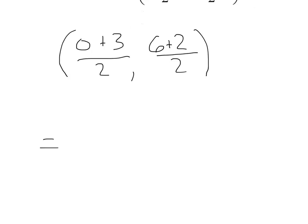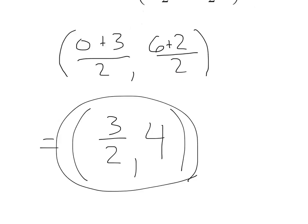From there, if we simplify all of it out, we'll get 3 halves. And 6 plus 2 is 8, divided by 2 is 4. And we've got a midpoint of 3 halves, comma 4.